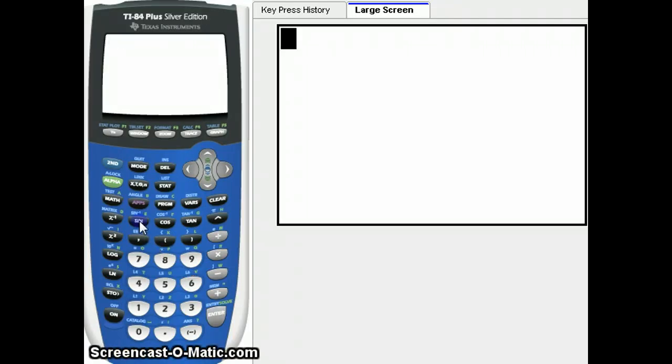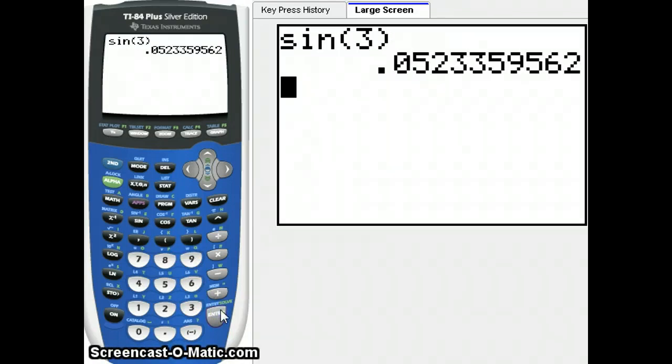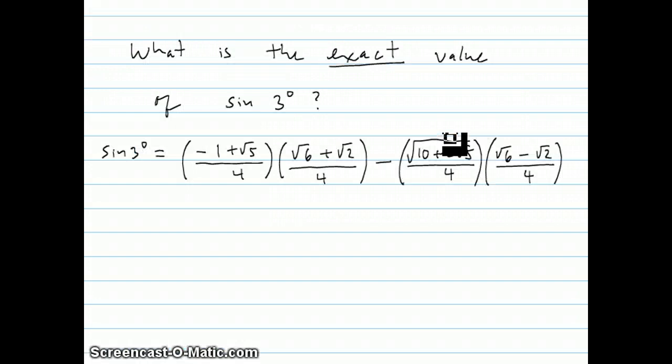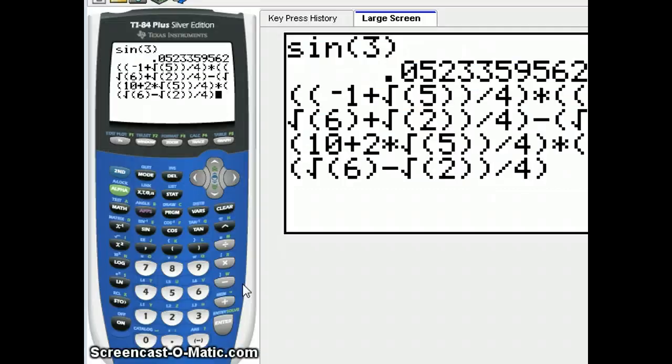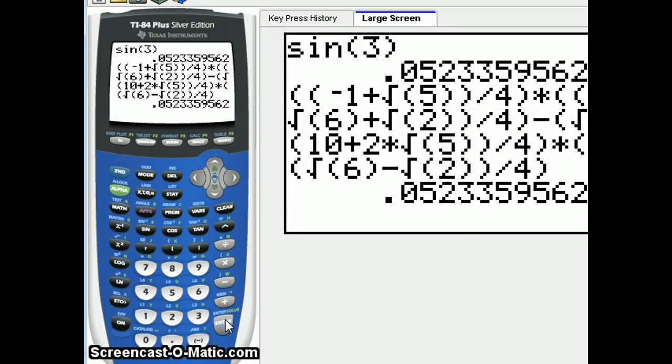On a graphing calculator, we can get an approximate answer to this question, which is about 0.05233. But the exact answer would be some complicated expression involving radicals. It turns out the exact answer to this question is written over here, and this is not at all obvious, but I'm going to show you how we can calculate out or use formulas to work out that exact value. I typed that massive value into the graphing calculator, and you will see that it gives us the same answer, that 0.05233 value.